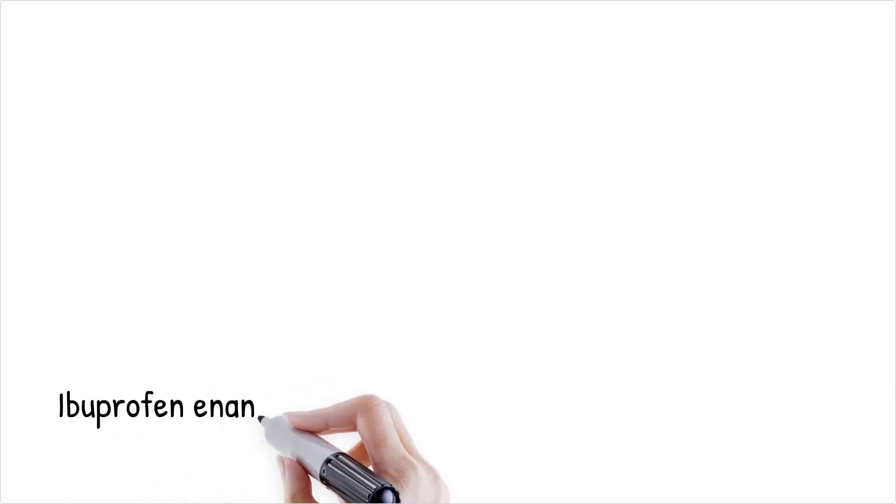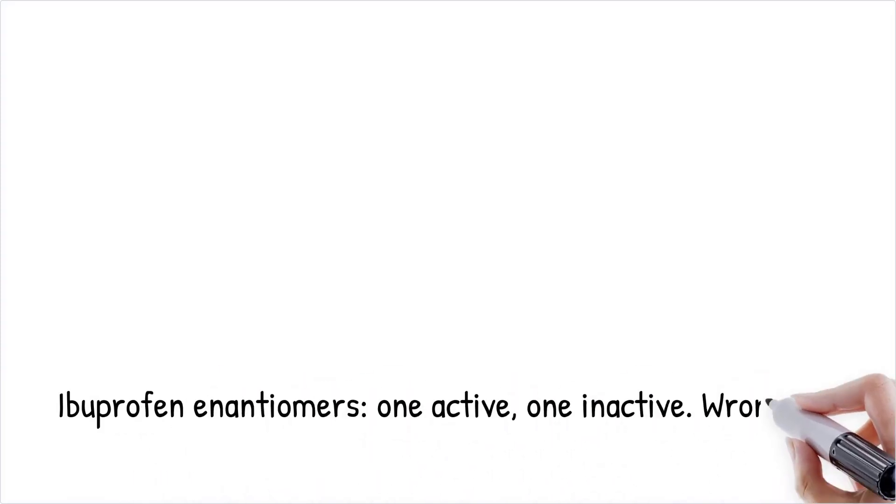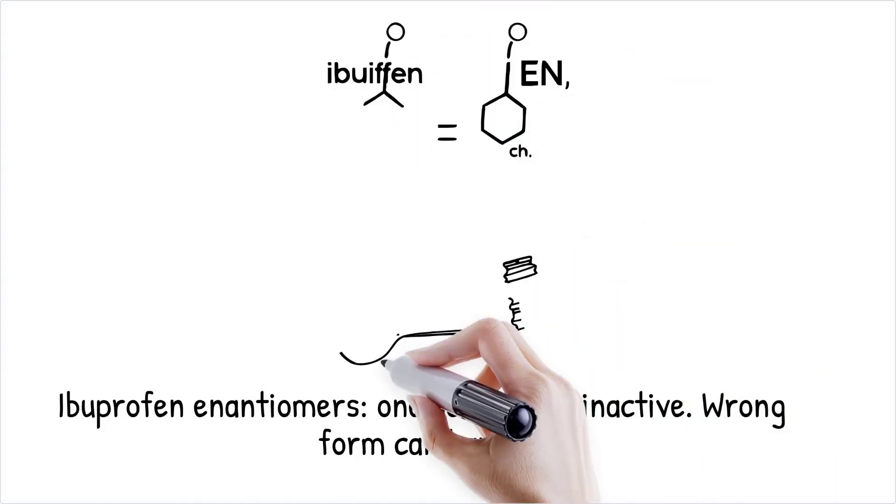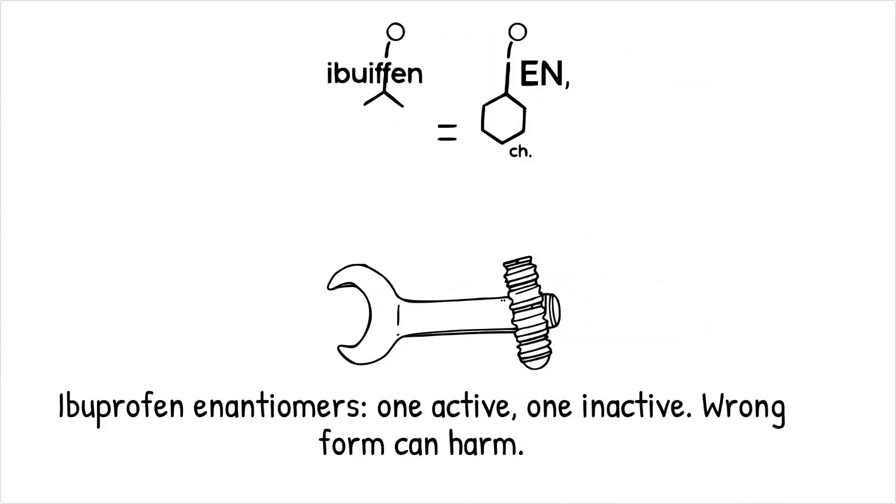The drug ibuprofen has two enantiomers, but only one is biologically active in reducing pain and inflammation. Using the wrong enantiomer in a drug is like using a mismatched wrench on a bolt—it may not work or could cause damage.